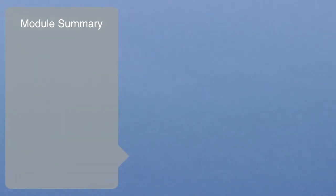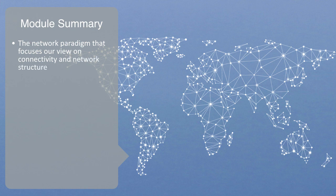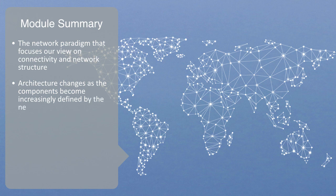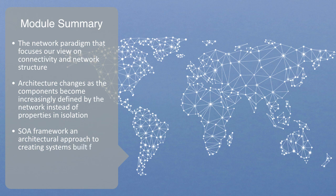In this short module, we have been taking an overview to technology networks, talking about the network paradigm that focuses our view on connectivity and network structure. How, when a technology system reaches a critical level of connectivity, its whole architecture changes as the components become increasingly defined by the network instead of their properties in isolation. We talked about how globalization and IoT are driving this next generation of technology networks. By giving examples on both the micro and the macro level, we've tried to show how this transition into a networked information age is truly an omnipresent and structural phenomenon. We finally looked at how this shift to a network paradigm gives rise to a SOA framework — an architectural approach to creating systems built from autonomous services that are aggregated through networks.